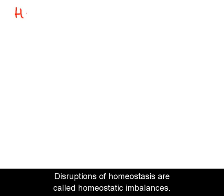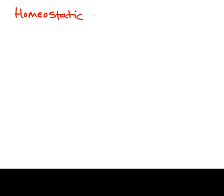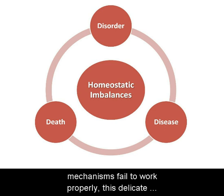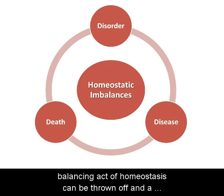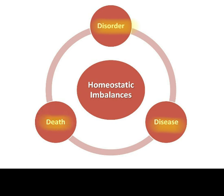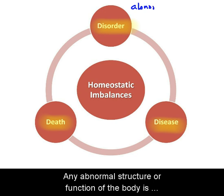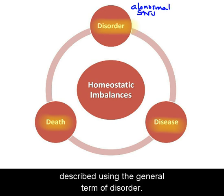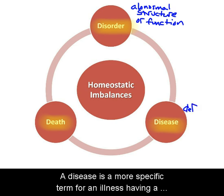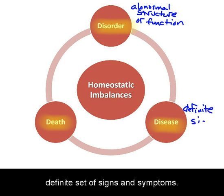Disruptions of homeostasis are called homeostatic imbalances. If any of the body's negative or positive feedback mechanisms fail to work properly, this delicate balancing act of homeostasis can be thrown off, and a disorder, disease, or death may occur. Any abnormal structure or function of the body is described using the general term of disorder.